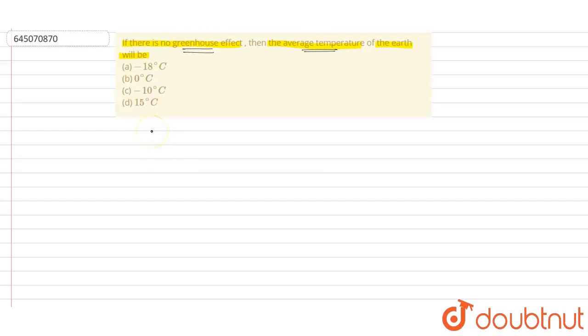Option A: minus 18 degree Celsius, option B: 0 degree Celsius, option C: minus 10 degree Celsius, and option D: 15 degree Celsius.